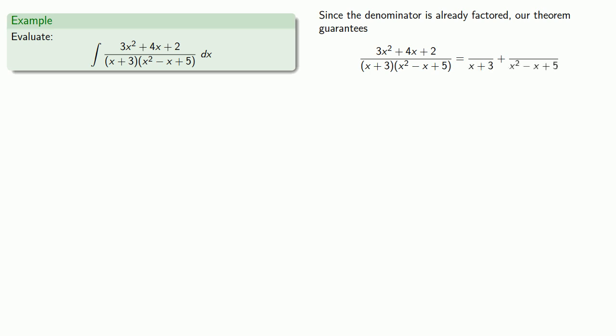And the numerators are expressions with a degree 1 less than the denominator. So the numerator of x + 3, a first degree polynomial, is a constant, which we'll call A. And the numerator of x² - x + 5, which is a second degree polynomial, is some first degree polynomial, which we'll call Bx + C.